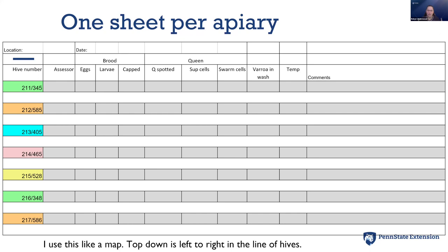My hive number is actually a series of two numbers. The first is the hive itself — the physical box the bees are in — and that serves as a location. I use this like a map; top-down on the sheet is left to right in my line of hives, so I have hive 211, 212, 213, etc. in a row. The second number tells me more about the colony inside — the queen and where she came from. The hive number location won't change year to year, but if a colony dies over the winter and is replaced, that second number will change.